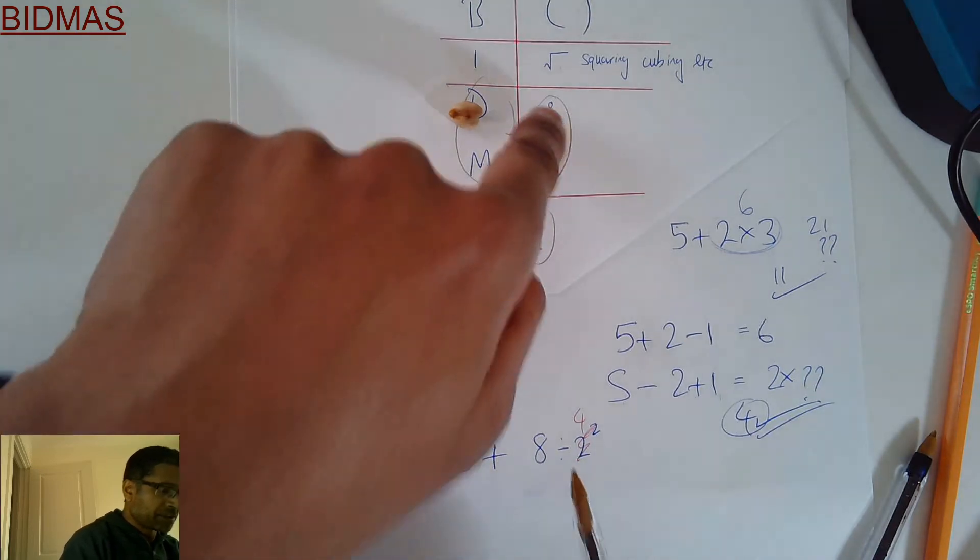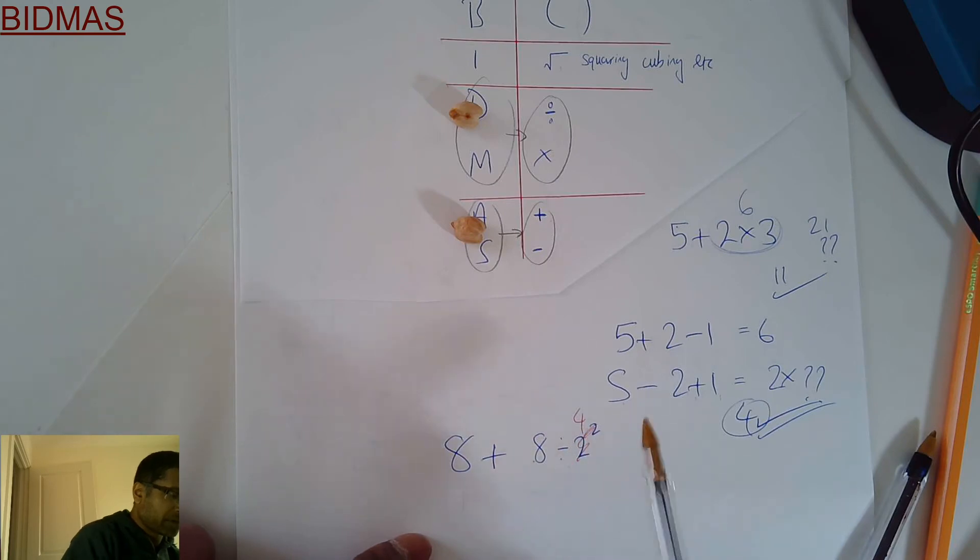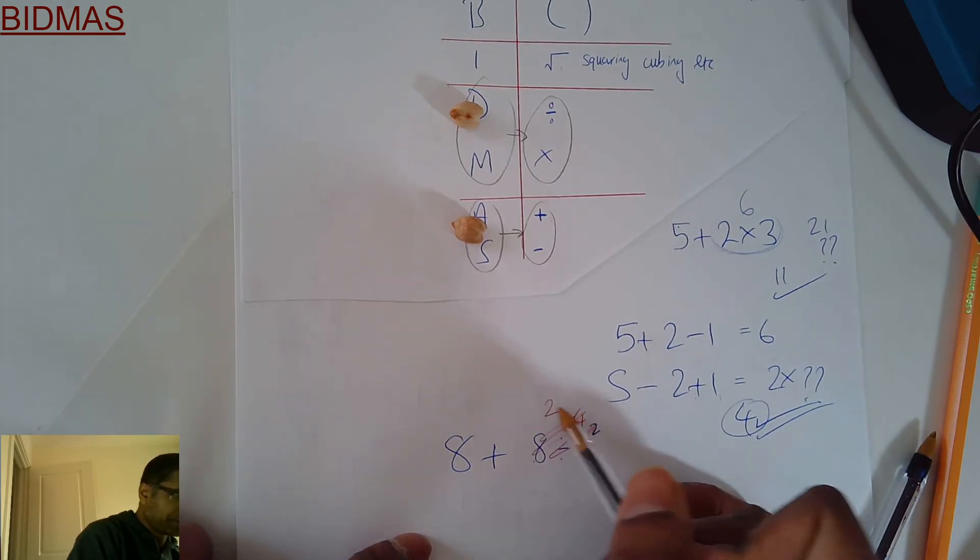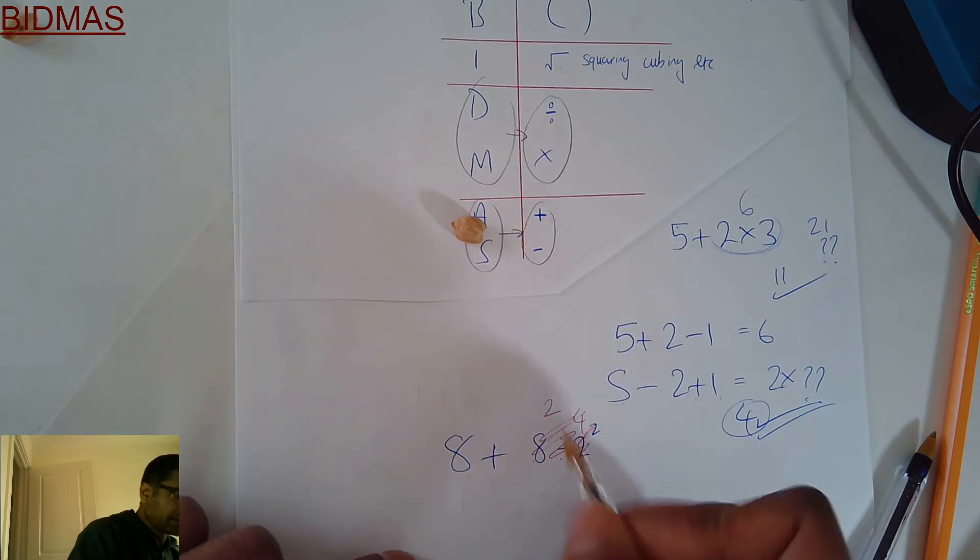Then we've got the division. Division first, then they're adding. So we'll do the division first. 8÷4=2. Just adding left over. 8+2=10.